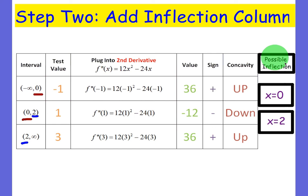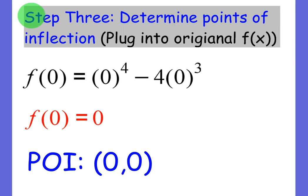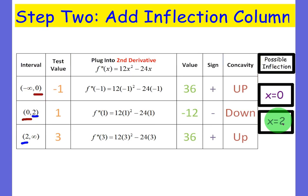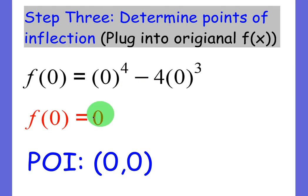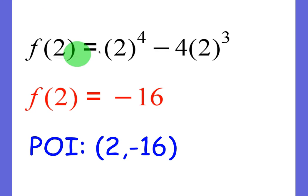Now why is it possible? Because we still have to plug it back into the original to see if we get a point back. It has to be defined there just like relative min and max. So we're going to plug in that first value, zero, back into the original and we get zero back. Since we got a point back, we know there's a point of inflection at zero comma zero. We're going to plug two back into the original. We get negative 16 back. So we know there will be a point of inflection at two comma negative 16. Again, that's where the concavity changes.